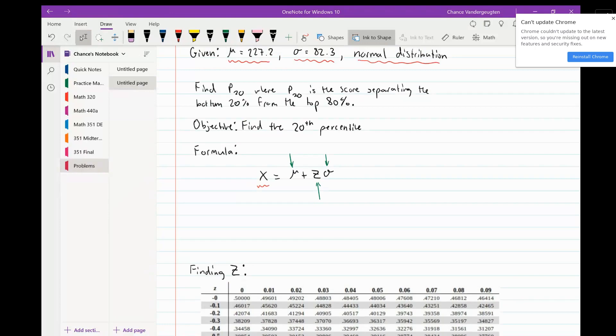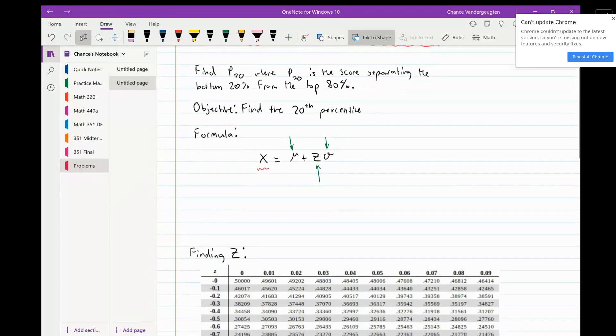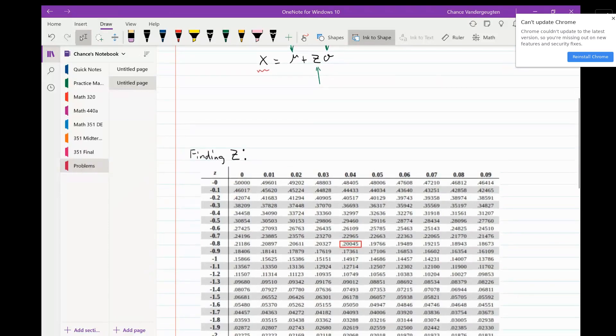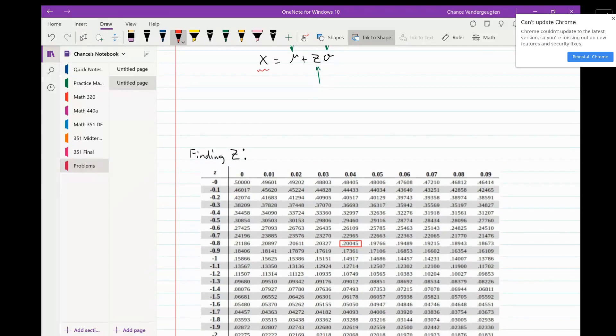Because we're looking for the 20th percentile, we want to find a value in the table that's as close to 20% as possible. I've highlighted it here. To figure out what the z-score is, you just follow the row and the column.